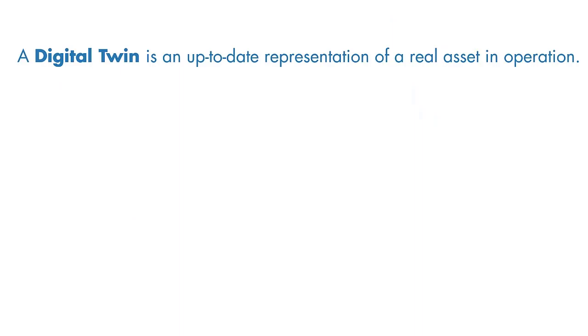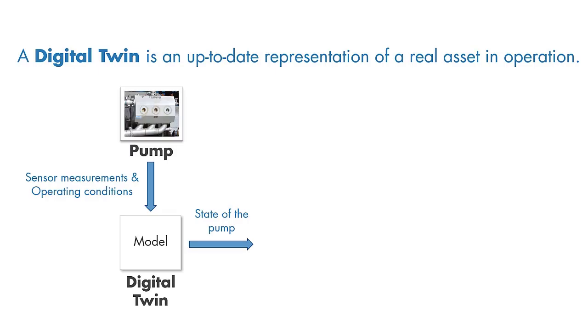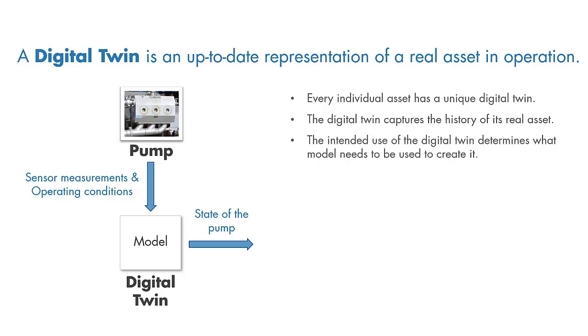In summary, a digital twin is an up-to-date representation of an asset in operation. The data captured from the asset and the environment are periodically sent to the digital twin, which is being updated with this data and tuned to its real asset. Every individual asset has a unique digital twin that also captures the history of its real asset. The modeling method we need to use to create a digital twin is driven by our intended use.